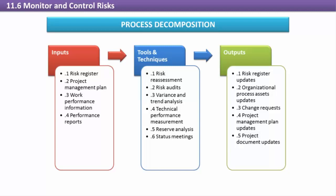Activities in the monitor and control risks process include watching for new risks, analyzing identified risks for changes in probability or impact, determining the need to execute contingency or fallback plans, reviewing risk response actions and their effectiveness for risks that are underway, and if necessary determining the need to implement fallback plans, and keeping a close eye on the risk watch list.